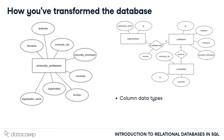You've defined column data types, added primary keys and foreign keys, and through that specified relationships between tables. All these measures will guarantee better data consistency and therefore quality. This is especially helpful if you add new data to the database, but also makes analyzing the data easier.